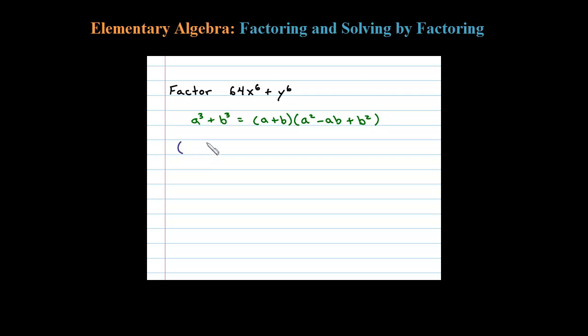What cubed plus what cubed? Looking at 64x to the sixth, 64 is a perfect cube—that's 4 cubed. What cubed is x to the sixth?